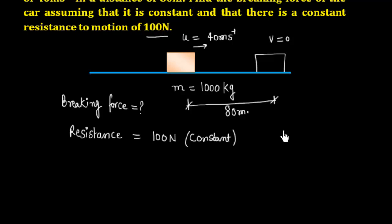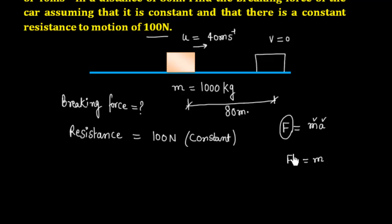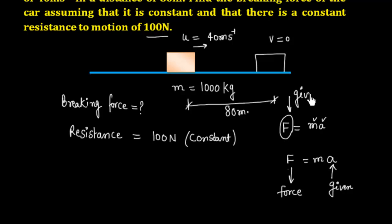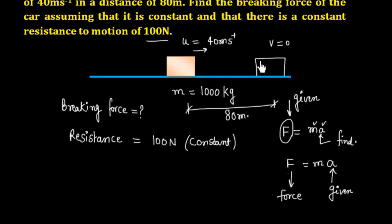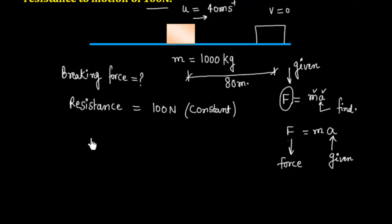This is essentially the reverse application of Newton's Second Law — here the acceleration is what we derive first, then find the force. Using the kinematic equation v² - u² = 2as: with v = 0, u = 40, and s = 80, we can solve for acceleration.